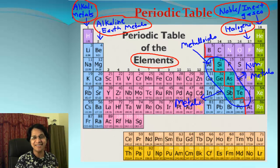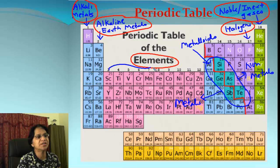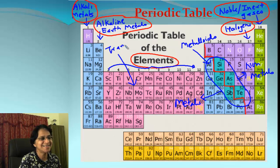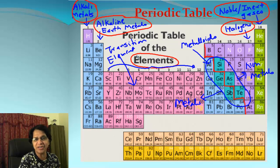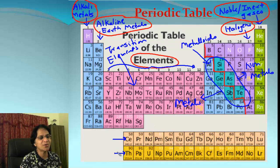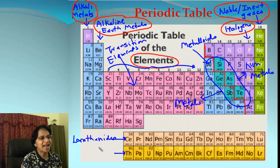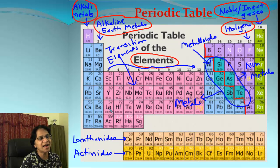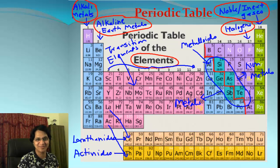All groups are important, but we will be talking about these four main groups. Elements from group 3 to group 12 are called transition elements or transition metals, and they have some different properties. At the bottom we have two rows — the top row is called lanthanides and the bottom row is called actinides, and those are extensions from lanthanum and actinium.